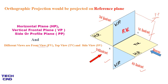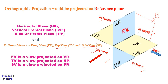Basically in orthographic projection we make three views — front view, top view, and side view — to explain the object clearly, because with the help of three views we can define our object clearly. The front view is always projected on the vertical plane, the top view is always projected on the horizontal plane, and the side view is always projected on the profile plane. Please remember these three things — it can be asked in exams which view is projected on which plane. The profile plane is used to project the side view only.